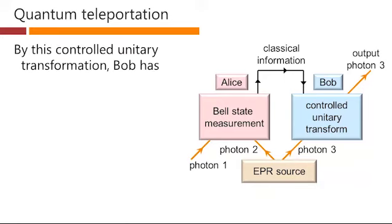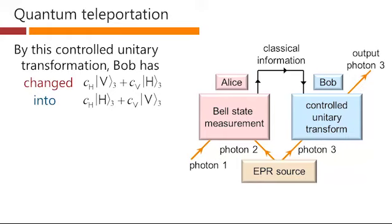By this controlled unitary transformation, Bob has changed this state for photon 3 into this state, which is the one he really wanted. And he's done this basically by putting in some polarizing components inside this path in here, and he's chosen the settings of those components based on the information he got over the classical channel.